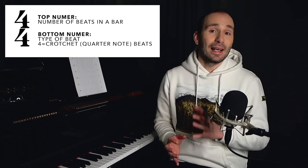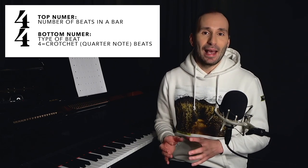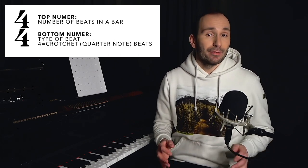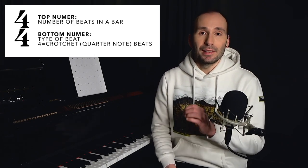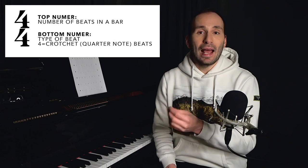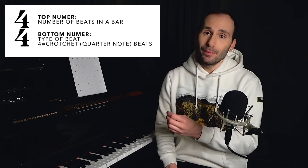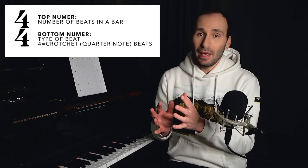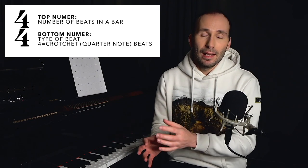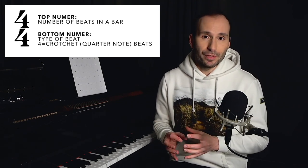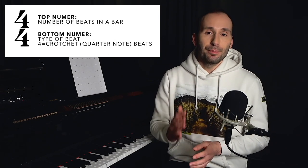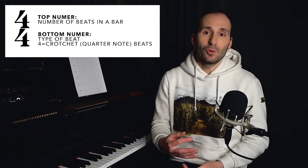The top number of a time signature tells us how many beats we are going to have in every single bar of the music. And the bottom number of the time signature is going to tell us what kind or how long each beat is going to be. So in this case, we have four beats in every bar, and the bottom number 4 stands for crotchets or quarter notes. So that means that each beat in the pulse is going to be equal to a quarter note.